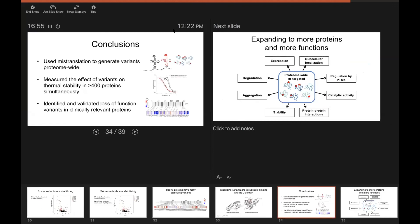So in conclusion, I told you about a new method that we're working on to use mistranslation to generate variants proteome-wide and how we can use this method to measure mutation effects in hundreds of proteins in a single experiment. And doing this, we can find loss of function variants, including those in clinically relevant proteins.